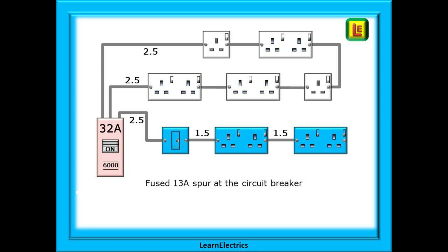And yet another method of extending a ring circuit. It is permissible to have a spur at the circuit breaker. This spur will use 2.5 millimeter twin and earth cable and is undersized for the breaker size. We must therefore install a 13 amp fused connection unit before any sockets on this spur. And then from the FCU the fused spur we can have whatever number of sockets we wish and they can be wired in 1.5 millimeter twin and earth cable if we so desire.